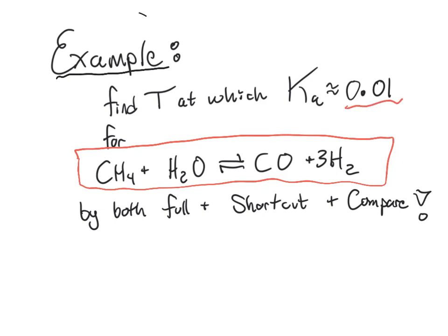And I want you to find Ka of 0.01. What temperature does that happen from both the full calculation? Don't do it by hand. Go ahead and use Kcalc for that. And by shortcut, which I want you to do by hand. And what I mean by by hand is use your calculator or use a spreadsheet if you want to, if that makes you happy.